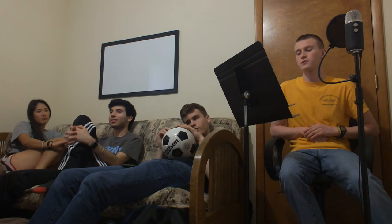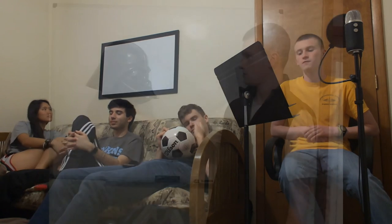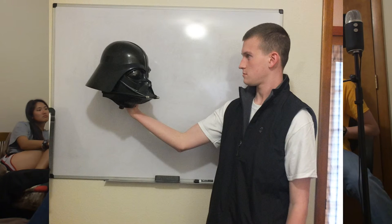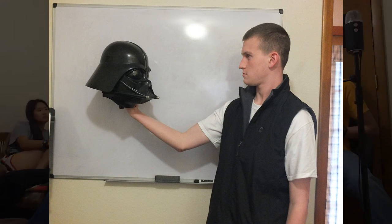Hamlet has an encounter with two clowns, or grave diggers, and is shocked by the carelessness with which they treat life. He finds the skull of Yorick, his former jester, and feels distraught that his dear friend had passed.